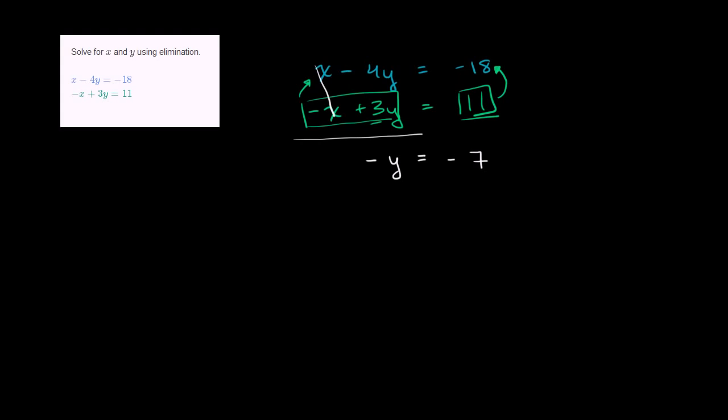And now we're in the home stretch. If we want to solve for y, we can divide both sides by negative 1, or multiply both sides by negative 1, depending on how you want to view it. So let's divide both sides by negative 1. We are left with y is equal to positive 7.